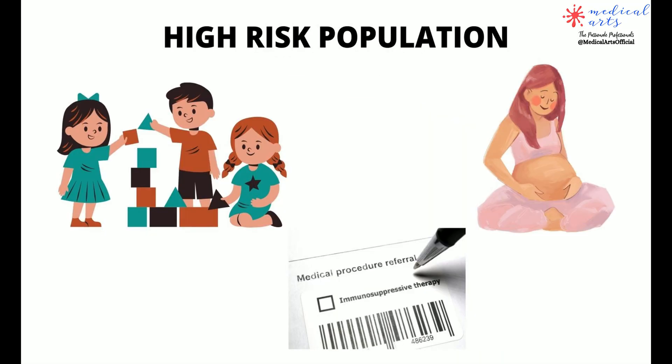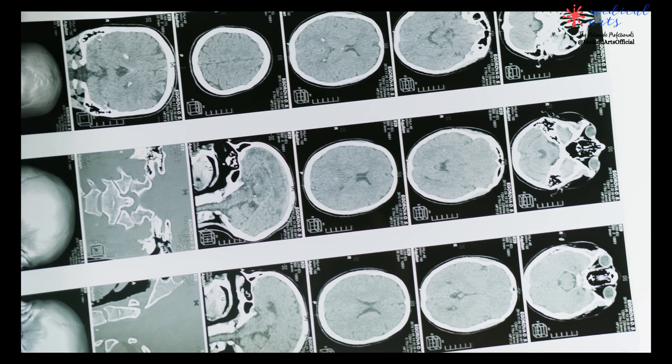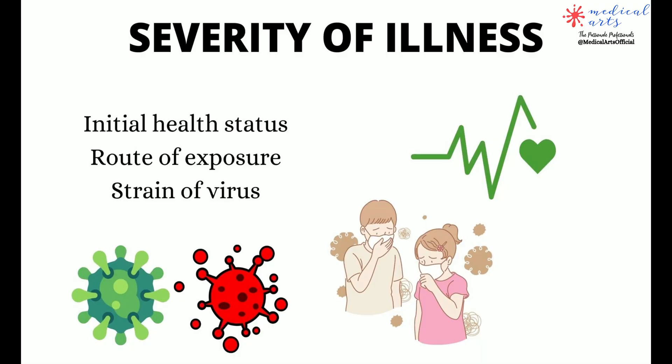High risk population: children, pregnant women, and some immunocompromised individuals are considered at higher risk for severe disease. The severity of illness can depend upon the initial health of the individual, the route of exposure, and the strain of the infecting virus.